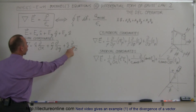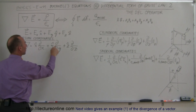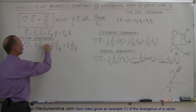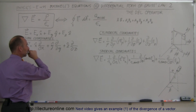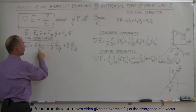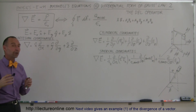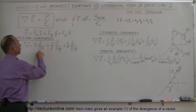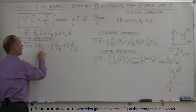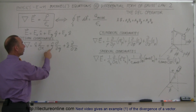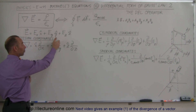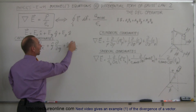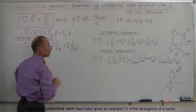Here's the del operator — it looks like a vector quantity. It has the x, y, z unit vectors, multiplied with a differential operation: it is taking the partial derivative of whatever it is that you're taking the del operator of, or the divergence of. It's the partial derivative with respect to x, plus the y unit vector times the partial derivative in the y direction, plus the z unit vector times the partial derivative with respect to z.